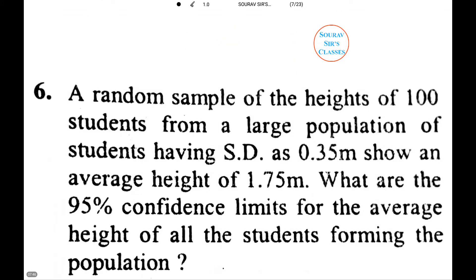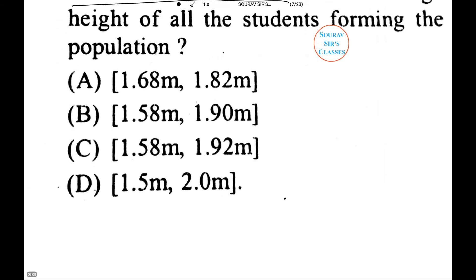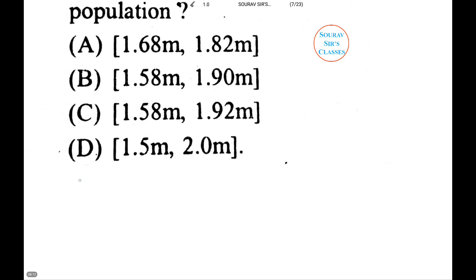Now in the next question, a random sample of the heights of 100 students from a large population of students having standard deviation 0.35 meters shows an average of 1.75 meters. What are the 95% confidence limits for the average height of all students forming the population? We have σ = 0.35, x̄ = 1.75, thus z_α/2 = 1.96. Therefore, standard error x̄ = σ/√n = 0.35/√100 = 0.035.